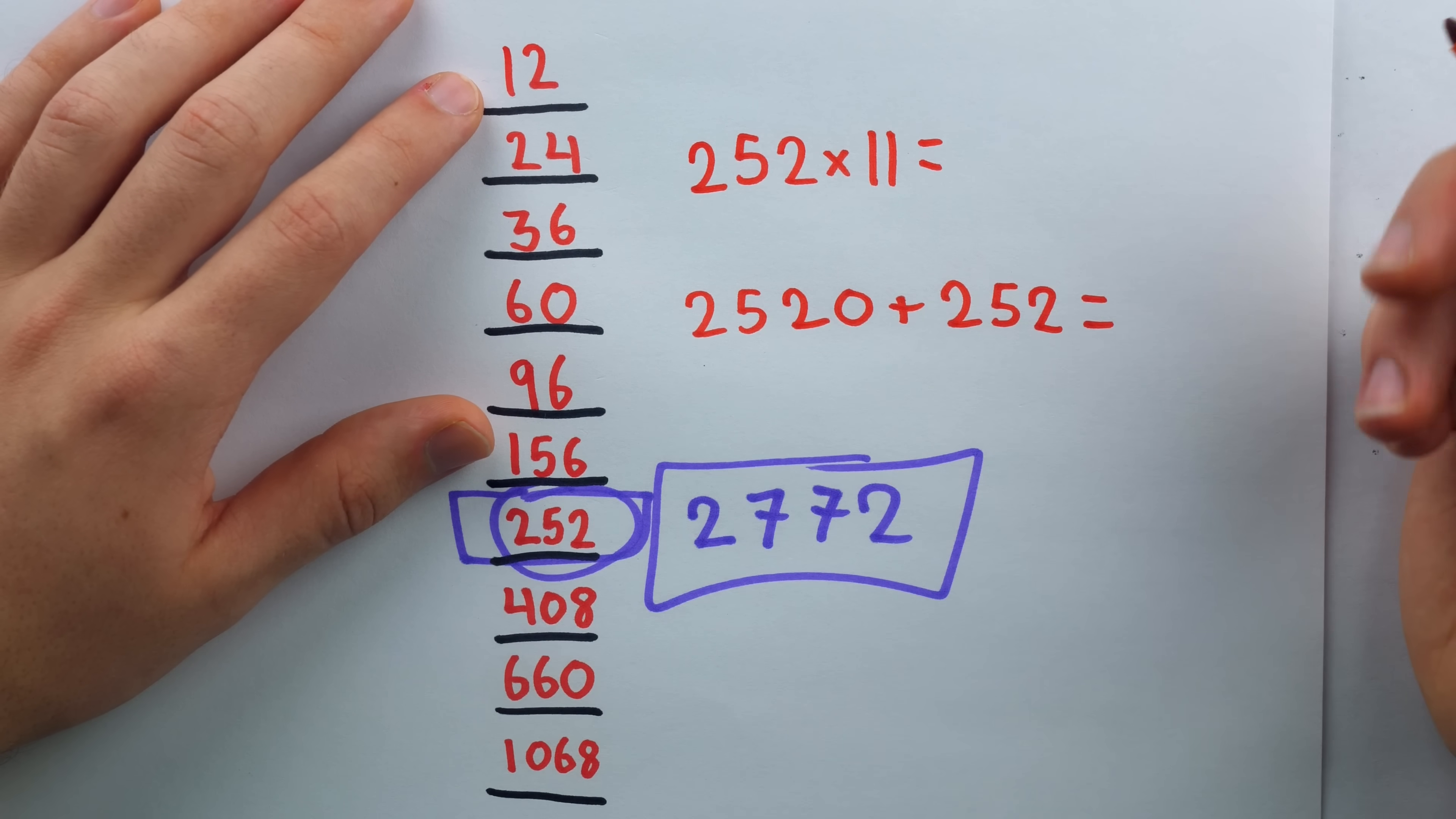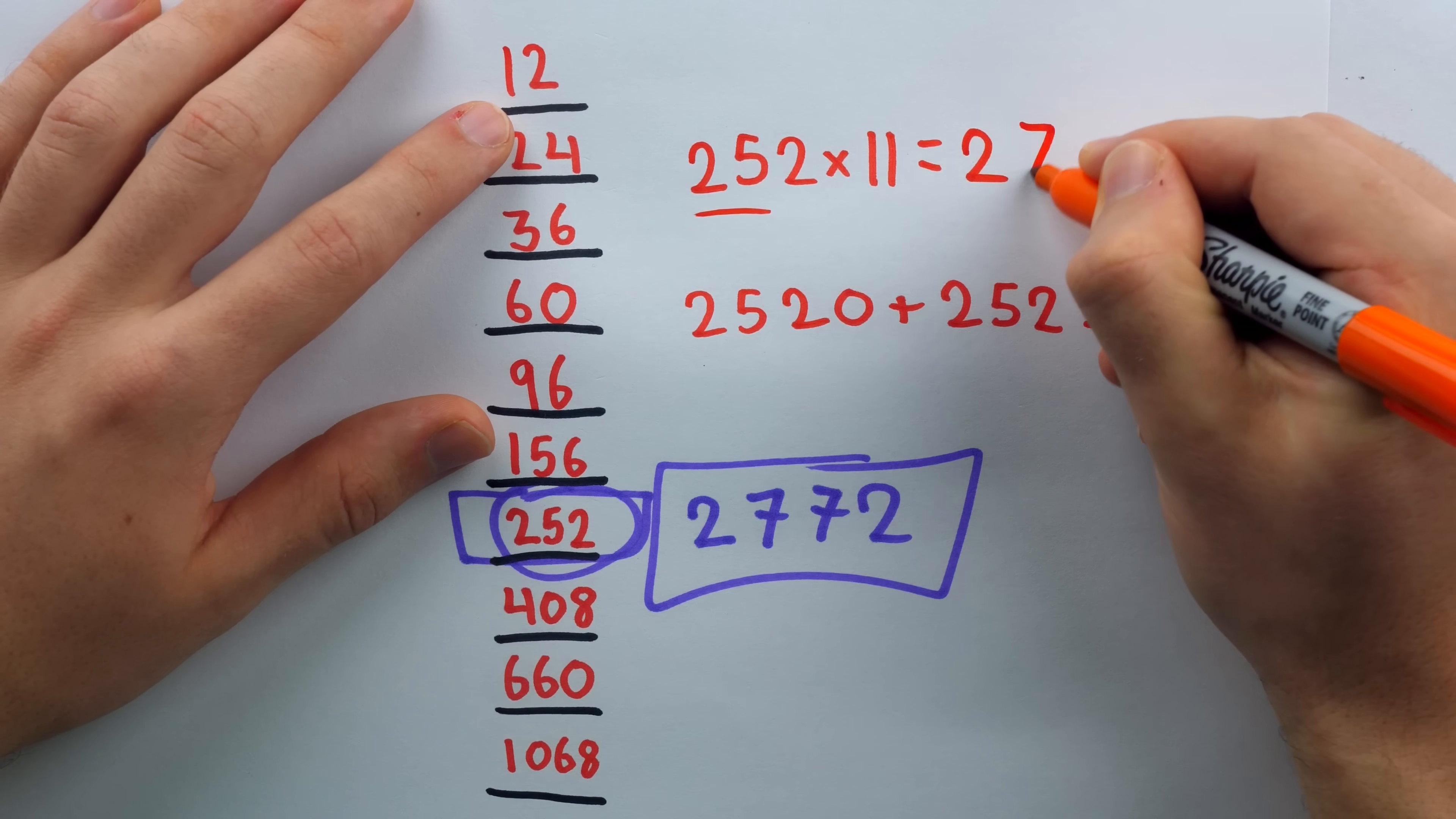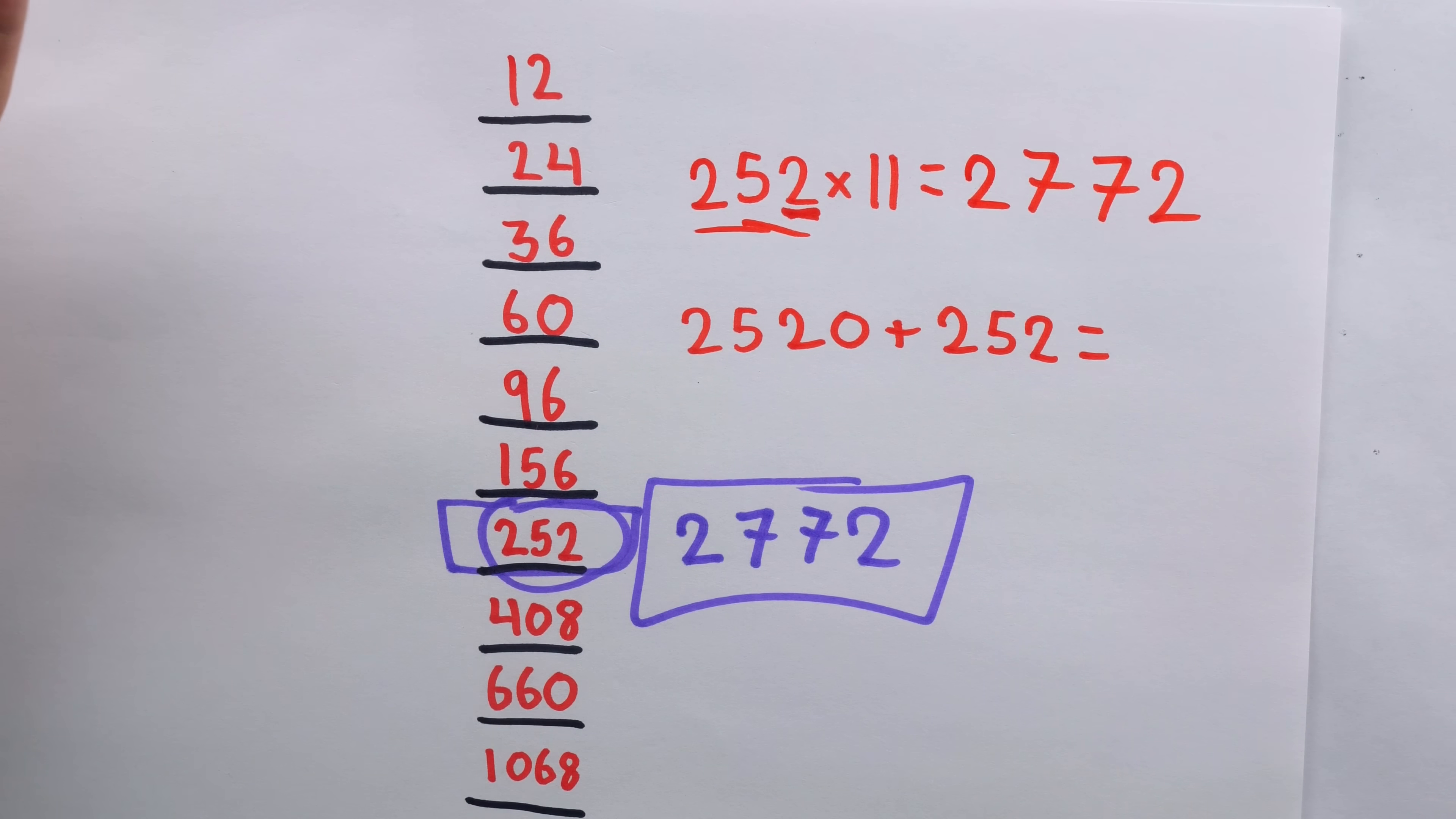I'll leave a link in the description to my video going over it. But all I do is say the first digit is going to be the first digit. And then, just add adjacent digits. 2 plus 5 is 7. 5 plus 2 is 7. And then, the last digit is the last digit. 2,772. You could do it super, super quick.